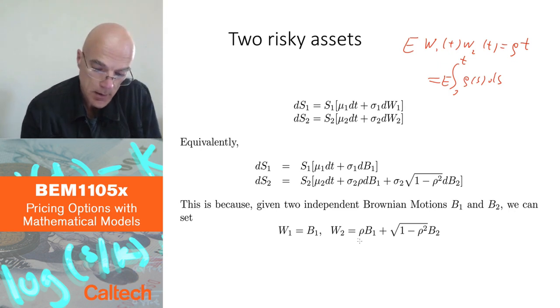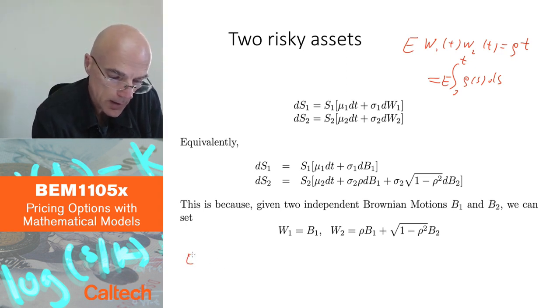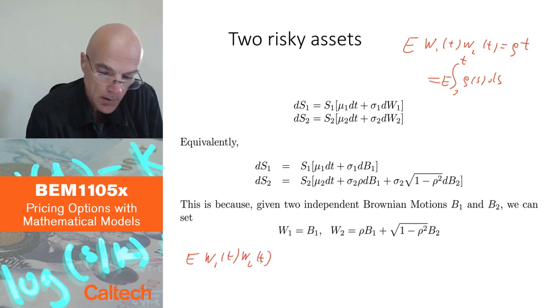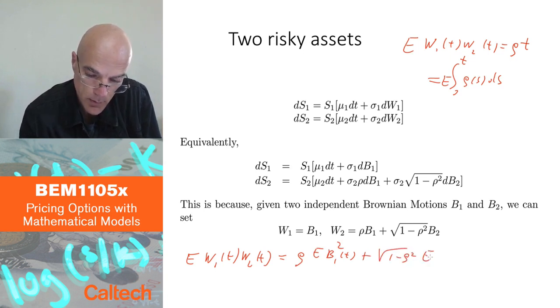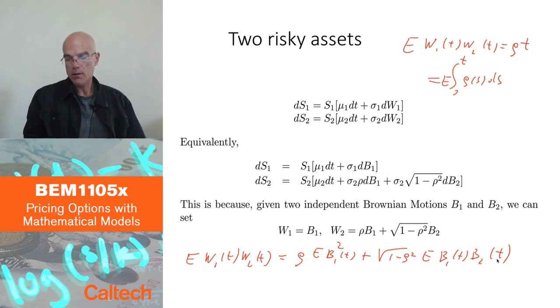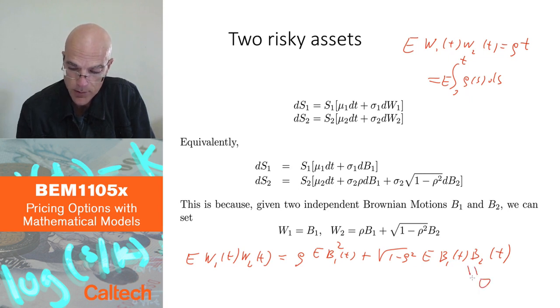Let's look at that. Let's look at correlation first. So if you do expected value of w1 of t, w2 of t, then you have rho times expected value of b1 of t squared, when I multiply this and this, and then you have plus square root of 1 minus rho squared, expected value of b1 of t, b2 of t. But because b1 and b2 are independent, expected value of a product is a product of expected values and their expected values are zero. So this expectation is just zero.